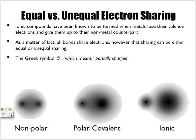Equal versus unequal electron sharing. Ionic compounds have been known to be formed when metals lose their valence electrons and give them up to their non-metal counterpart. As a matter of fact, all bonds share electrons, despite what we've known that covalence is the only one. However, that sharing can either be considered equal or an unequal type of sharing. What we have here are three types of bonds that occur: non-polar covalent, polar covalent, and ionic.